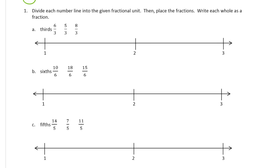We're dividing each number line into the given fractional unit and then placing the fractions and writing each whole as a fraction. So we have to label for this first one, thirds. So between 1, 2, and 3, we need to mark these in thirds and write each whole as a fraction.